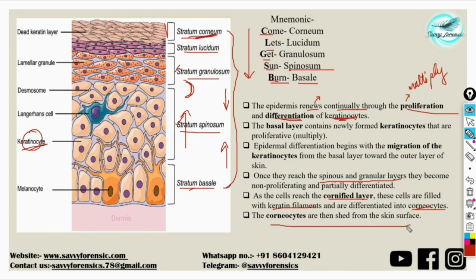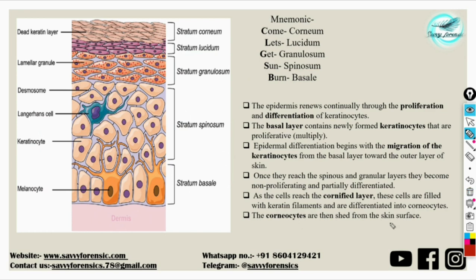The corneocytes are then shed from the skin surface. This is very important — these corneocyte cells are responsible for what we call touched evidence, which we get from the skin. This is the basic principle of skin's forensic significance. These corneocytes are shed and act as a potential source of biological evidence, or a potential source of DNA evidence.